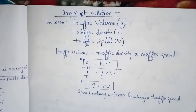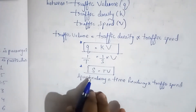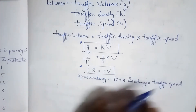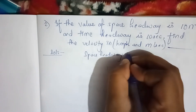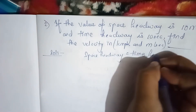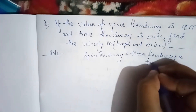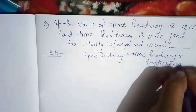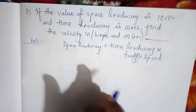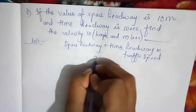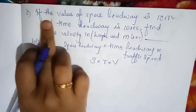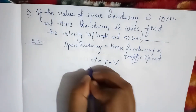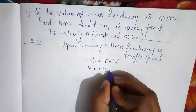In the previous lecture we saw an important relationship: space headway = time headway × traffic speed. Denoting space headway as 's', time headway as 'h', and traffic speed as 'V'. In our question, space headway is 10 meters and time headway is 10 seconds.